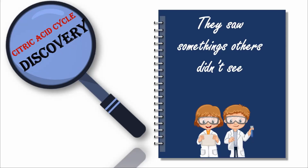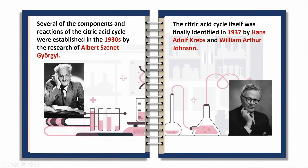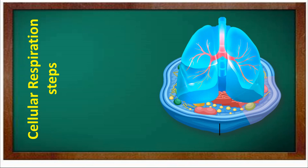Citric Acid Cycle Discovery. Several of the components and reactions of the Citric Acid Cycle were established in the 1930s by the research of Albert Szent-Györgyi. The Citric Acid Cycle itself was finally identified in 1937 by Hans Adolf Krebs and William Arthur Johnson.